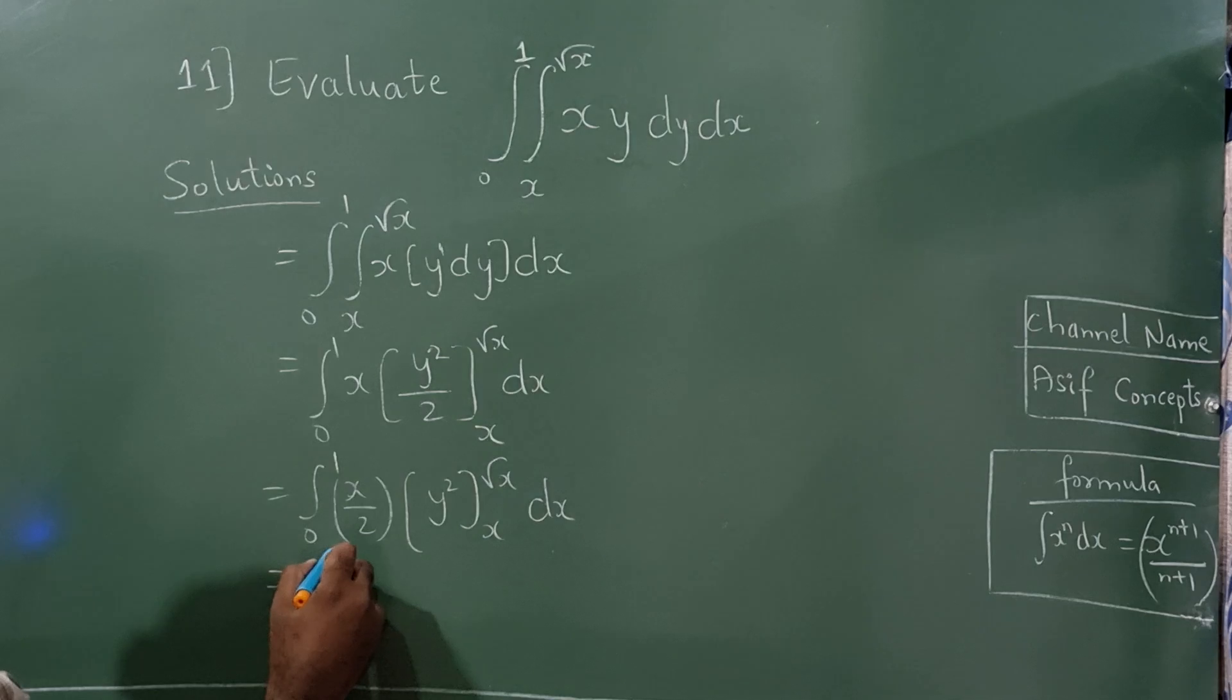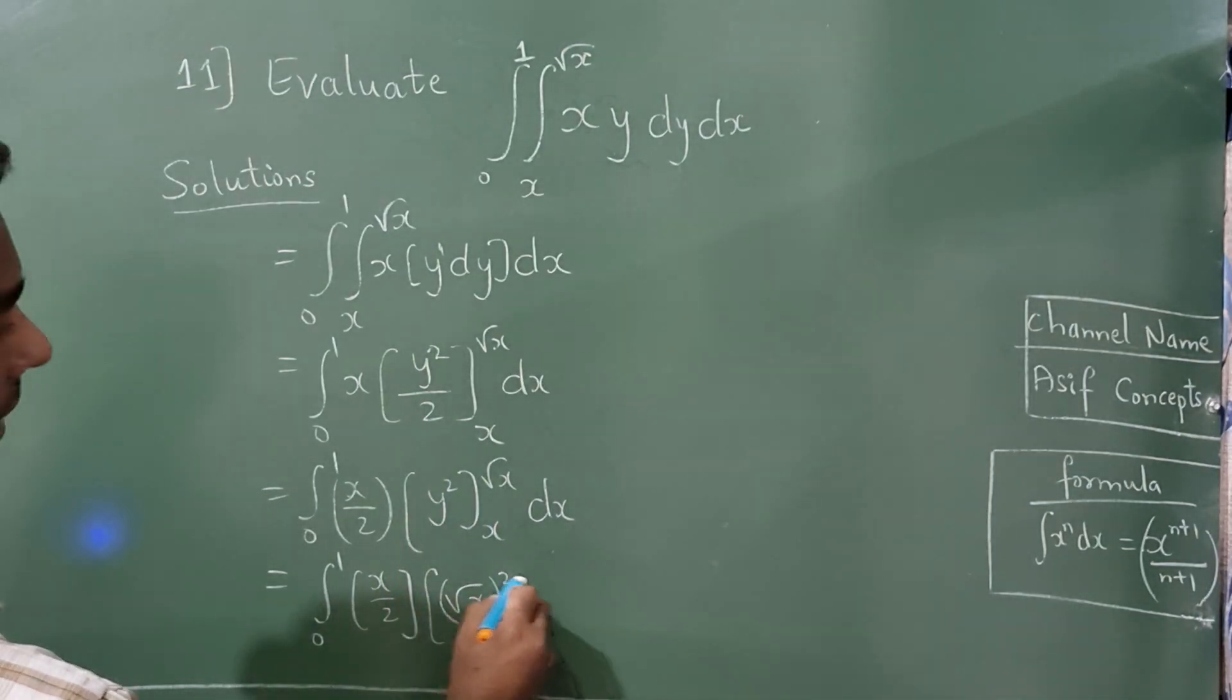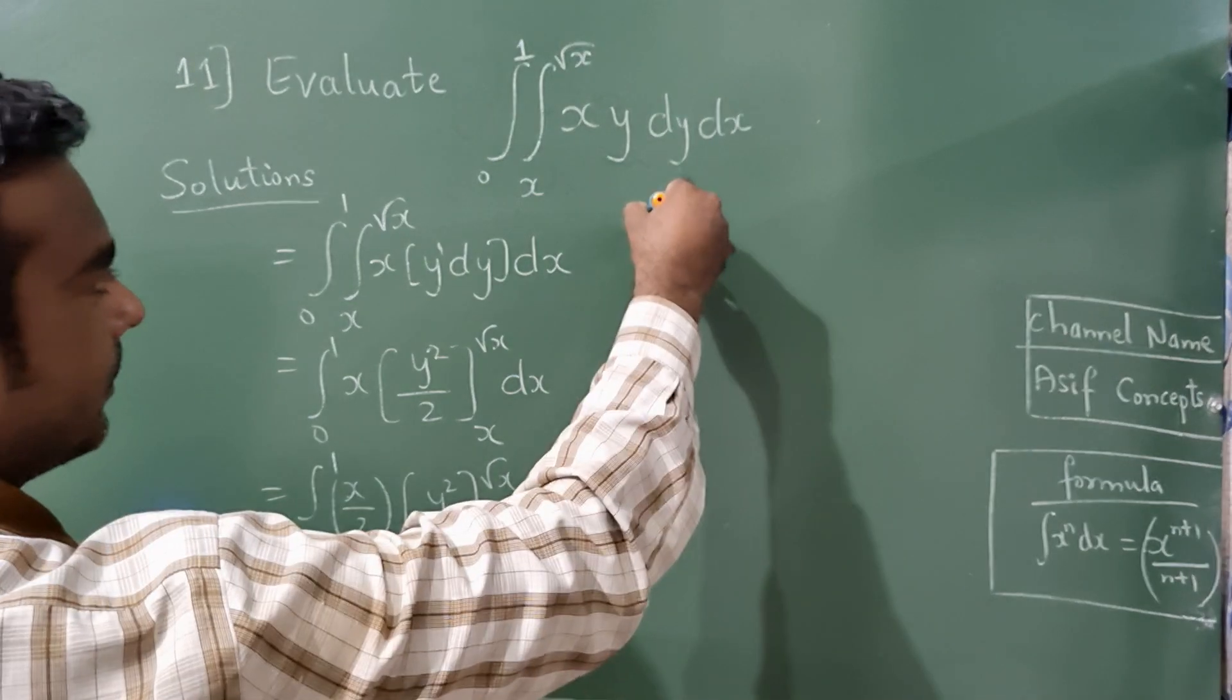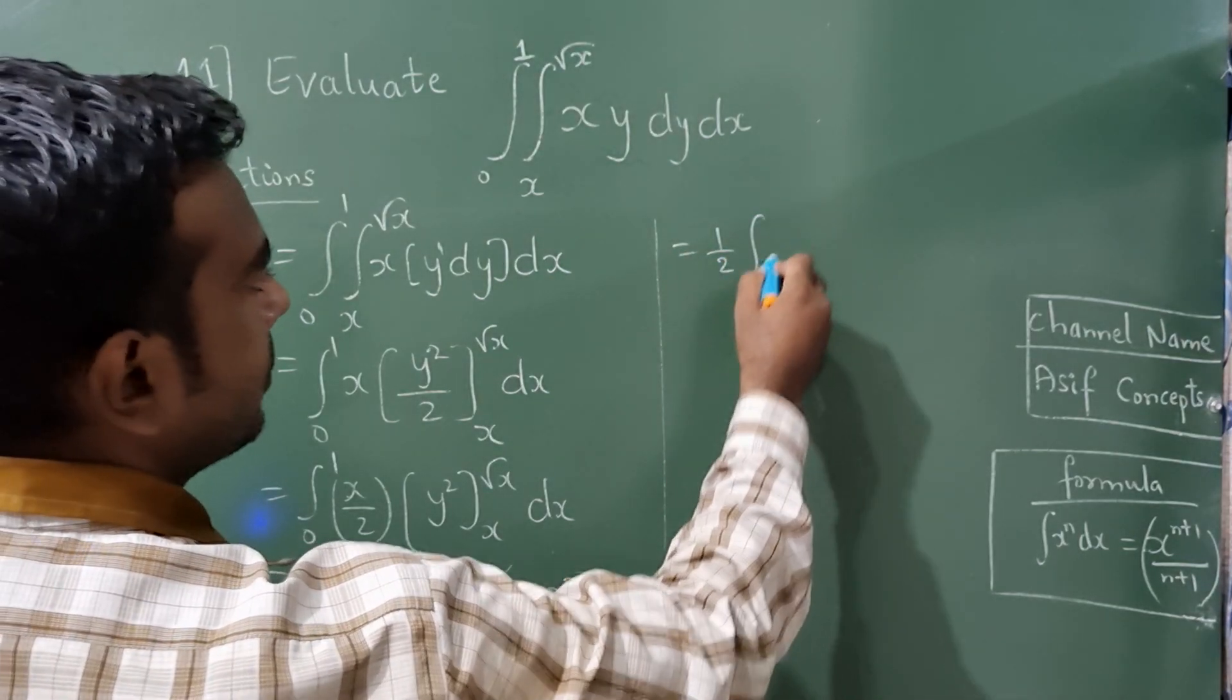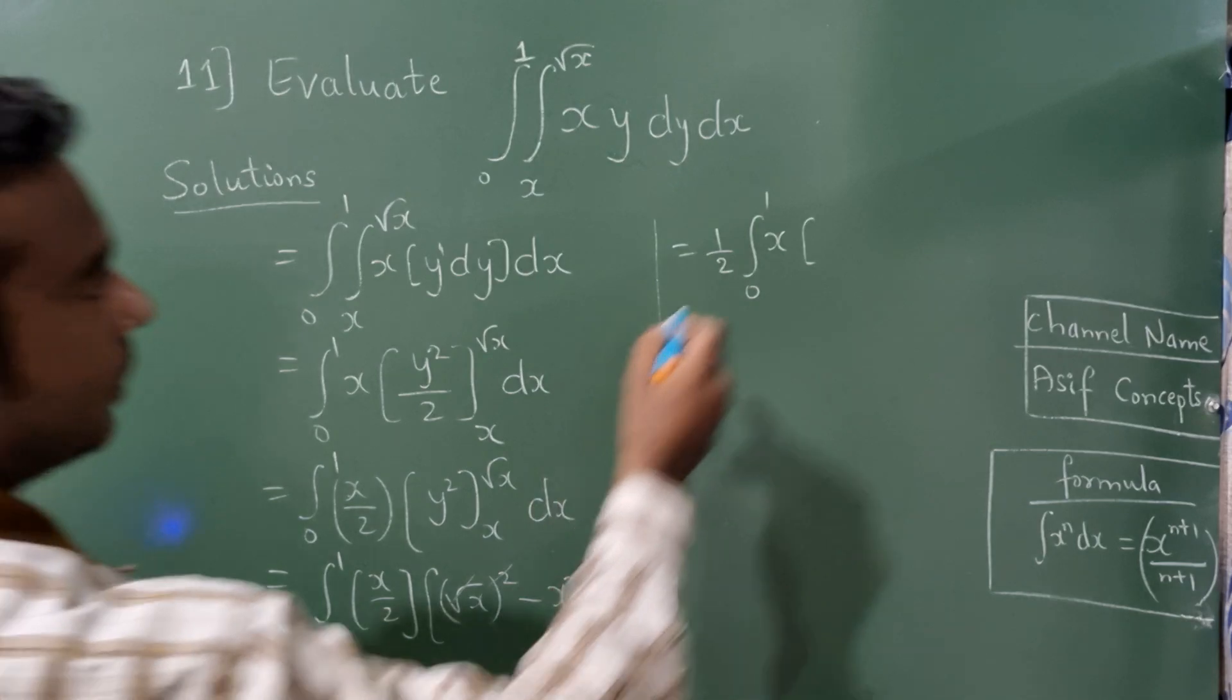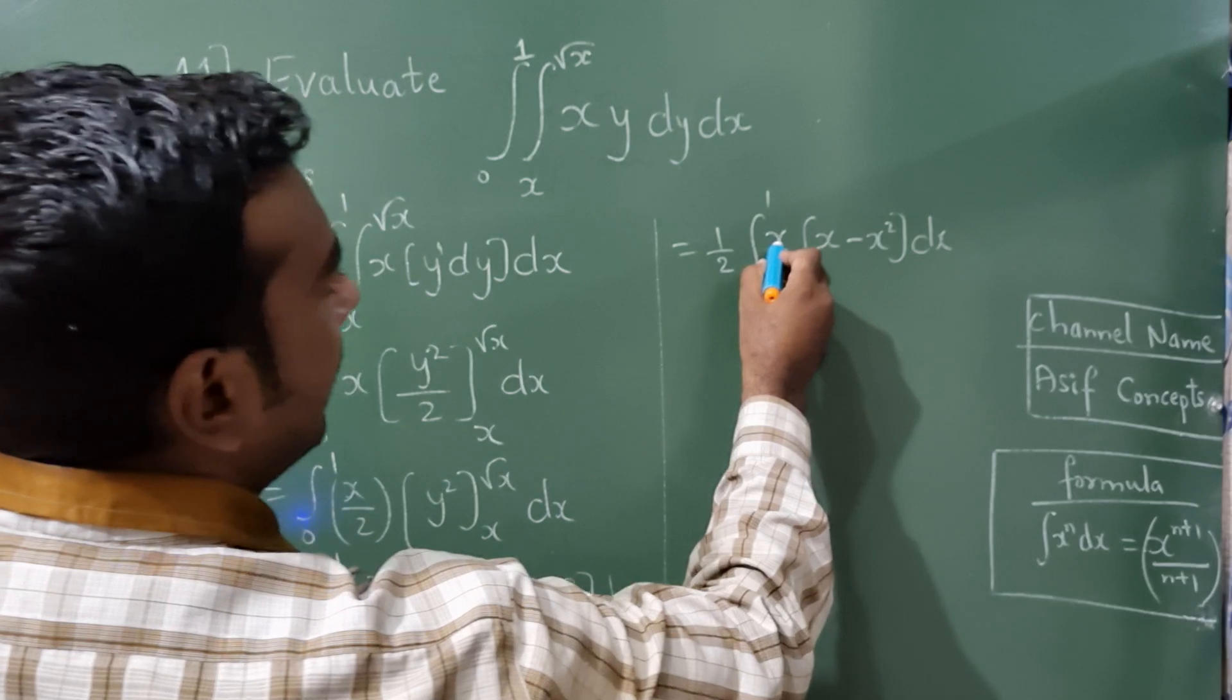From 0 to 1, x by 2. Now in place of y, substitute root x and there is a square here and here also there is a square dx. Okay, now square root get cancelled. Write 1 by 2 outside, 0 to 1, x. Now what is left here? Only x minus x square dx.